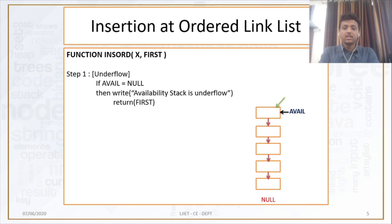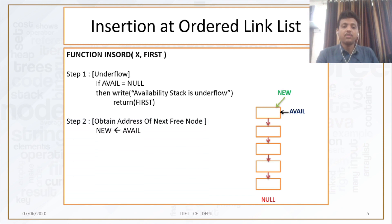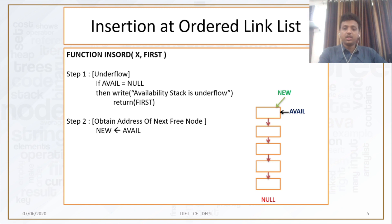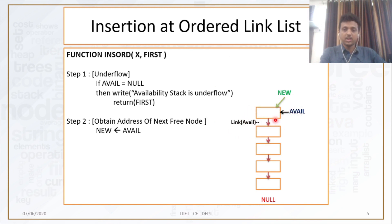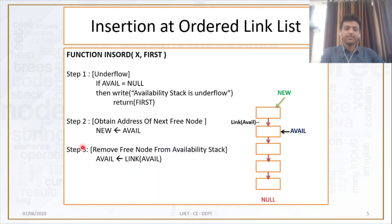The next step is to assign the new pointer to avail. If new points to avail, we write new arrow avail — obtain the address of the next free node. Then we move avail to link of avail. The third step is: remove free node from availability stack, that is avail arrow link of avail. So three steps are common in insertion of singly linked list: check underflow, get the new pointer, and remove node from the availability stack.